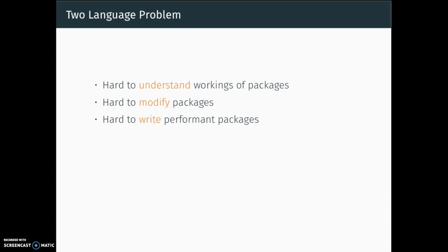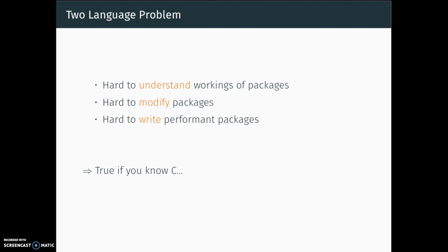Similarly, it's harder to modify a package. As academics, we are largely trying to move things in directions they haven't been before. So if you need to calculate a different type of standard errors or run a slight modification on a library, and that library is hidden in C while you're an R or Python programmer, you're in real trouble. And then finally, it's really hard if you want to write a package for others — you prototype it in R or Python, then rewrite the whole thing in C. This is especially true coming from the social sciences.